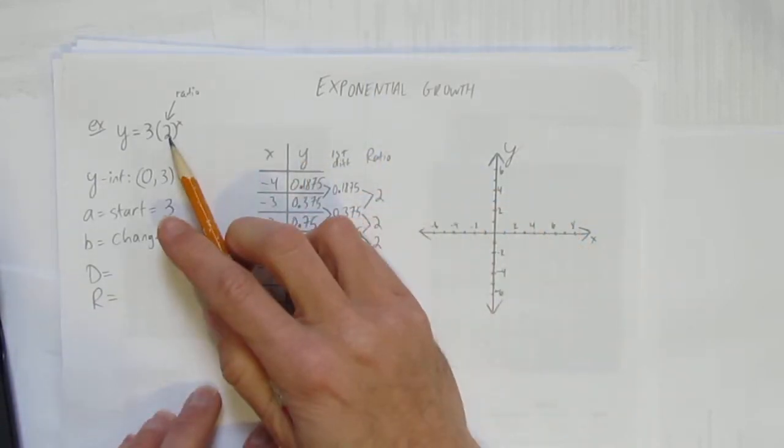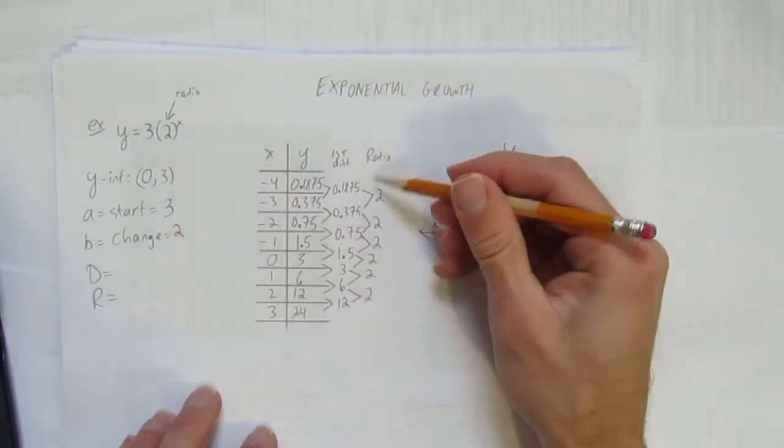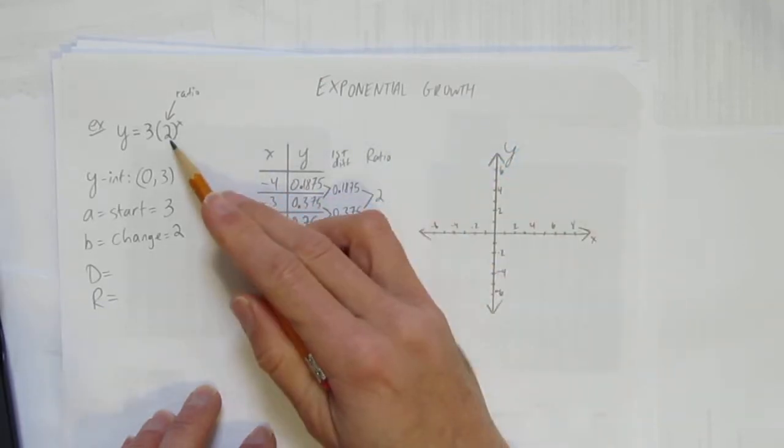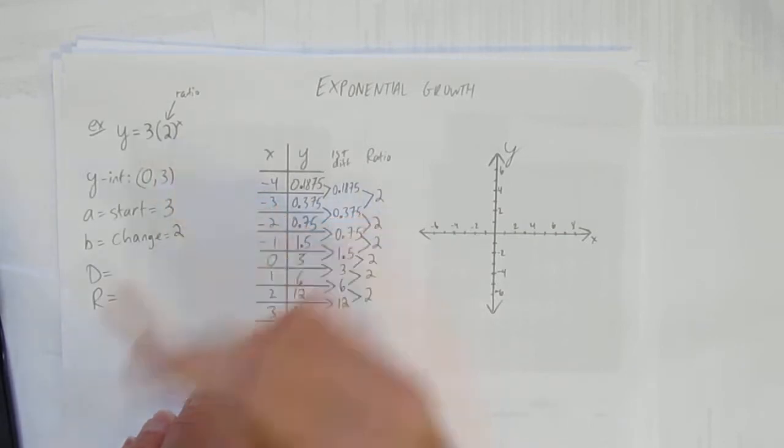Which we knew. Look, we already identified the ratio, the change, was 2. This had to be the case—that this ratio column is whatever the base or change or ratio is in the exponential equation.